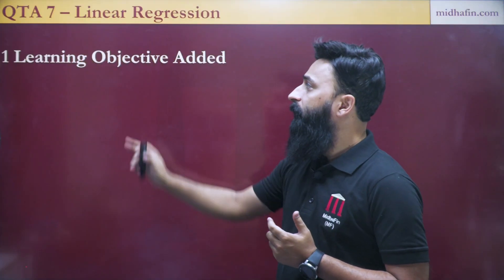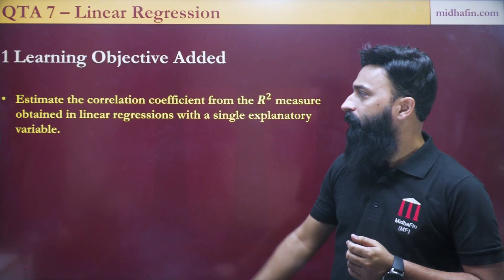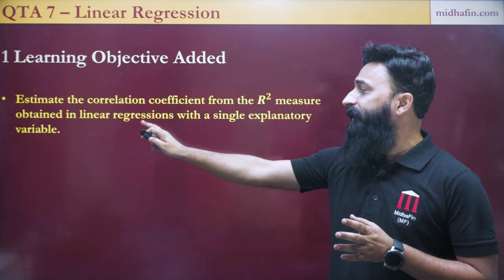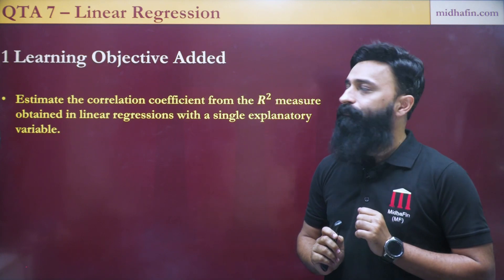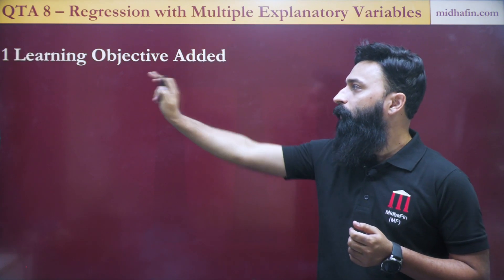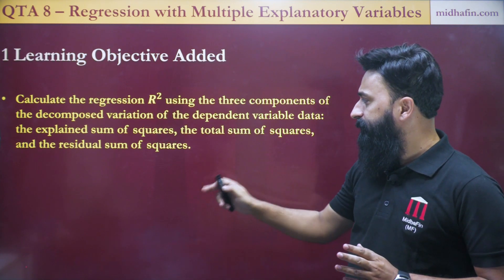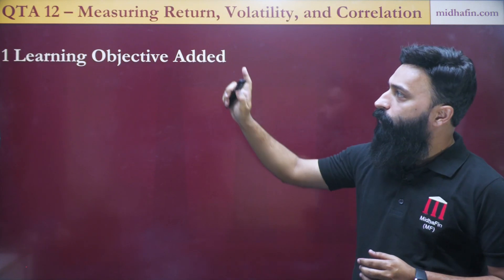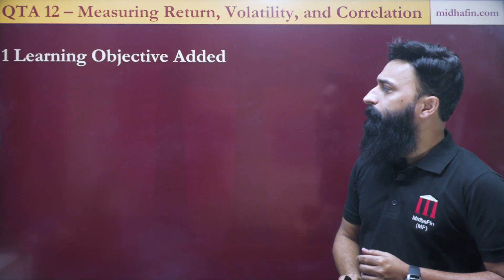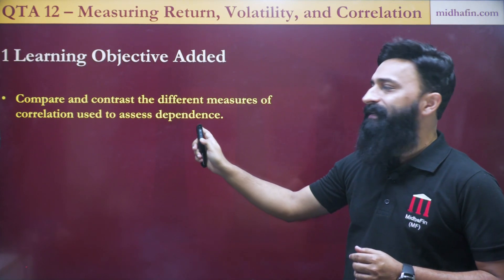In the Quantitative Analysis module, in the 7th chapter QTA 7, Linear Regression, one learning objective has been added: estimating correlation coefficient from R-squared measure in the case of linear regression with a single explanatory variable. Then in QTA 8, the 8th chapter on regression with multiple explanatory variables, one learning objective has been added which is calculation of R-squared using ESS, TSS and RSS. Then in the 12th chapter, measuring return, volatility and correlation, one learning objective has been added: comparing and contrasting the different measures of correlation used to assess dependence.